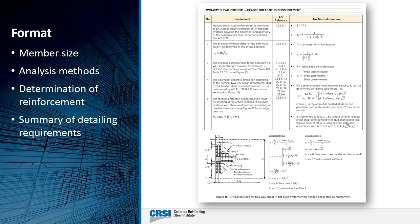Each checklist, which is printed on durable paper for repeated use, has the same basic format and contains the code-prescribed requirements and section numbers along with auxiliary information on how to correctly interpret and apply the requirements.